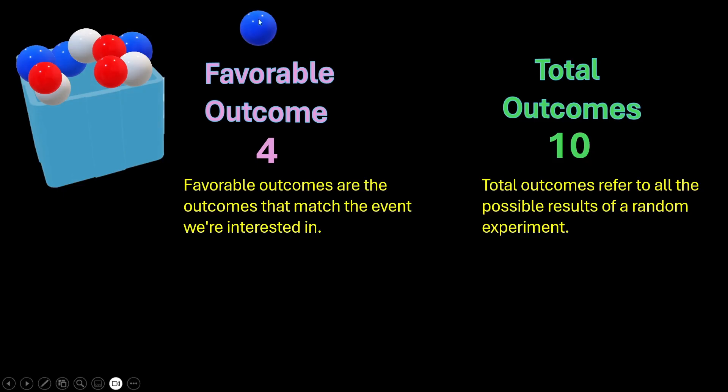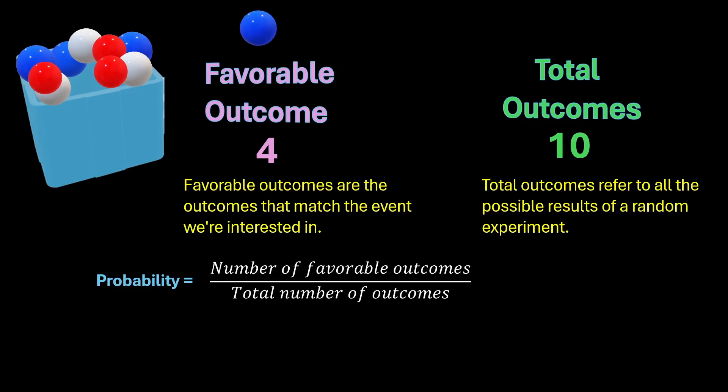Now, we calculate probability using these two. Probability is actually the ratio of number of favorable outcomes to total number of outcomes. In this case, the probability of drawing a blue ball from this box would be 4 favorable outcomes over 10 total outcomes, so 4 by 10 or 2 by 5. We can also find this in percentage. Let's multiply it by 100 and we get 40%. So, the probability of drawing a blue ball from this box is 40%.